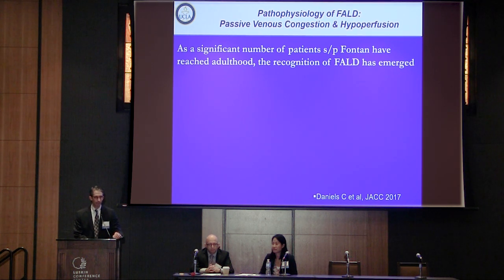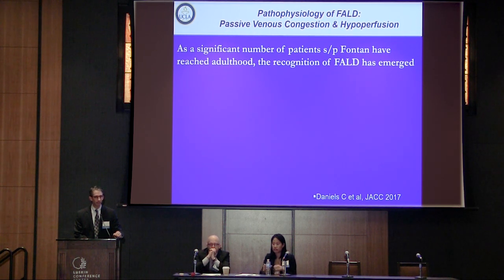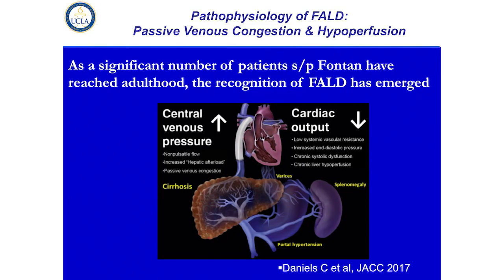As was highlighted by Dr. Reardon and others, the number of adults who've had Fontans has increased over the decades, and the recognition of Fontan-associated liver disease is now front and center in this field. In terms of the pathophysiology, this highlights from the consensus statement and others the common factors that are driving this. Number one, increased CVPs in these patients and decreased cardiac output that then places a burden on the liver, which can lead to a spectrum of disorders, including on the far end of the spectrum, cirrhosis and its complications.